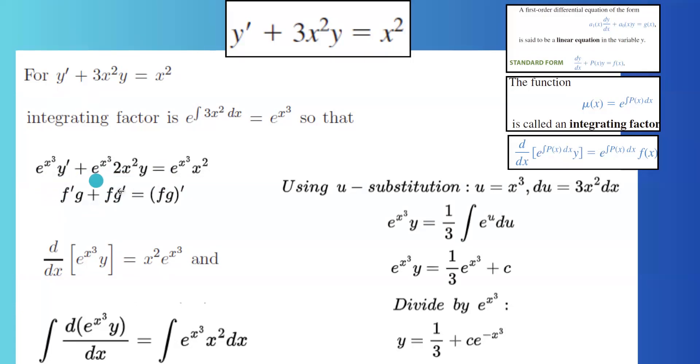Your left hand side is basically the expanded form of multiplication. So on the left hand side you have the differential of e to the x cubed y, and on the right hand side you have x squared e to the x cubed.